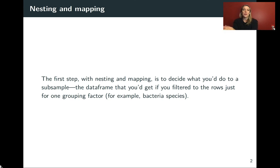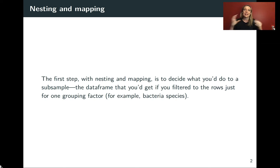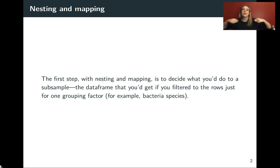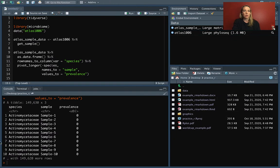So the first step with nesting and mapping is we're going to think about what we might do with just a subset of the data. This nesting and mapping idea is that you can group by something in your data and nest by that, and then apply the same thing across each example. We're going to look at doing this with the microbiome dataset we were just exploring. Make sure you run the code from the previous lecture if you'd like to try this yourself.